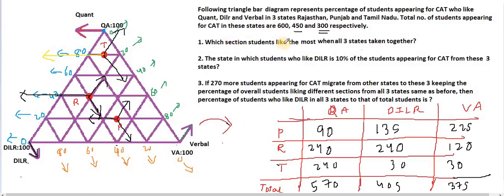The first question is: which section do students like the most when all three states are taken together? So Quant is 570, DILR is 405, Verbal is 375. The answer for the first question is nothing but Quant.